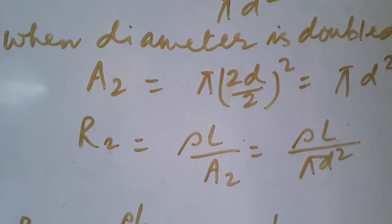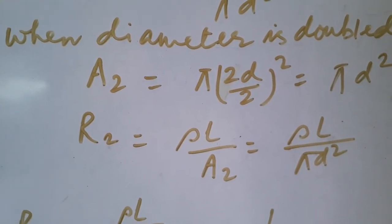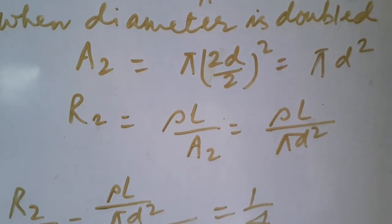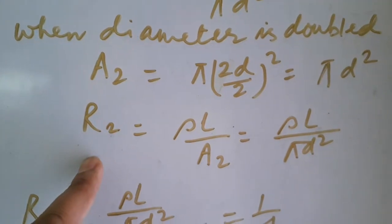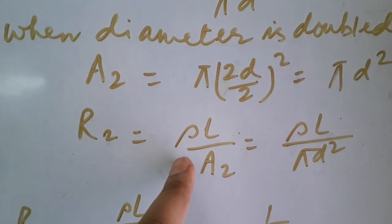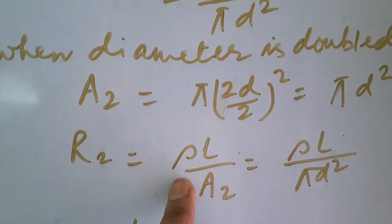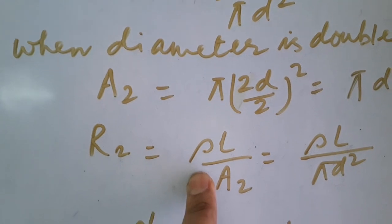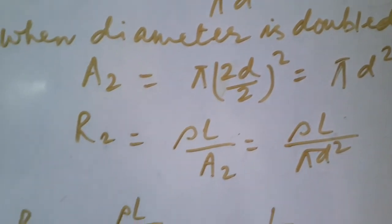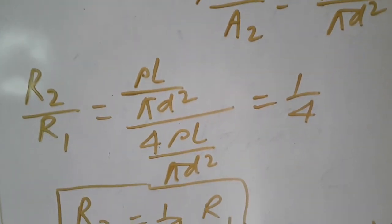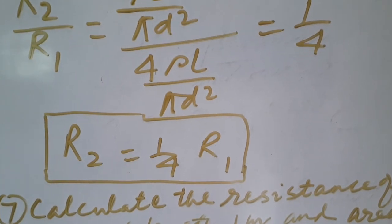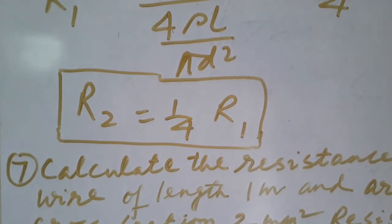Find the area in second case A2 equal to pi 2D by 2 whole square which is pi D square. Now resistance in the second case R2 equal to rho L by A2. Since the length is same and material is also same, then resistivity will remain the same. Put the value of A2 and get the value of R2. Taking the ratio R2 by R1, you will get R2 equal to 1 by 4 R1.